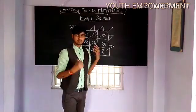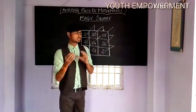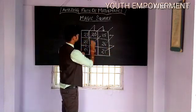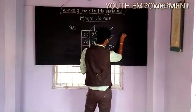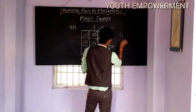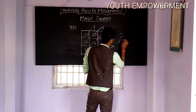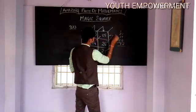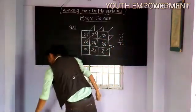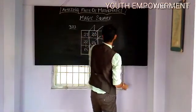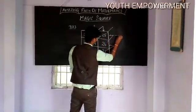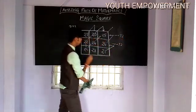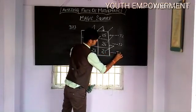I call this a magic square — and the reason is, if you add these numbers: 25, 27, 20 — you get 72. The sum total is 72. When you add this row, you will get 72. And when you add this row, you will get 72. When you add this row, you will get 72.